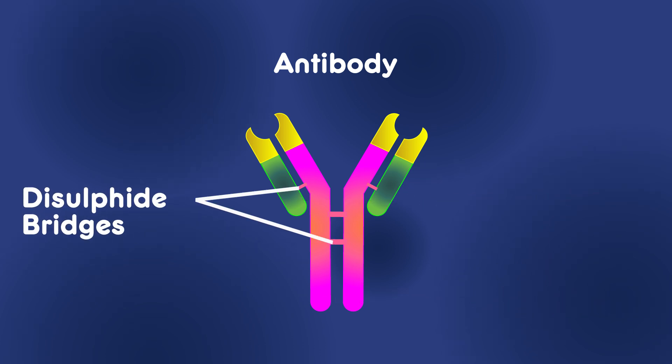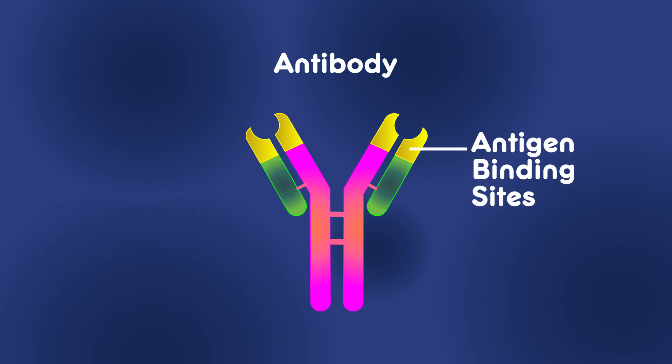Here, at the tip of each arm are the antigen binding sites. These are really important parts for attacking invading antigens.